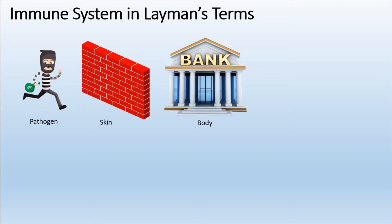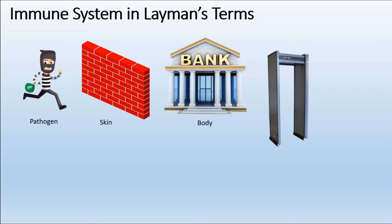Suppose the robber managed to cross the first barrier and is about to enter the bank. The bank has only a single door, and that door has different kinds of protections like a metal detector. In our case, if a pathogen is trying to enter via the oral cavity or the nasal cavity, we also have certain protections for those routes.